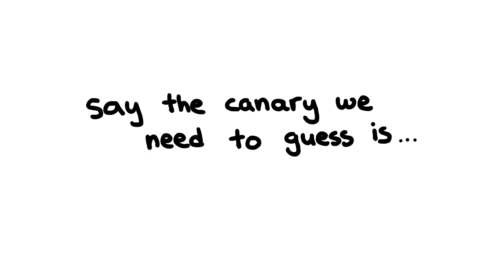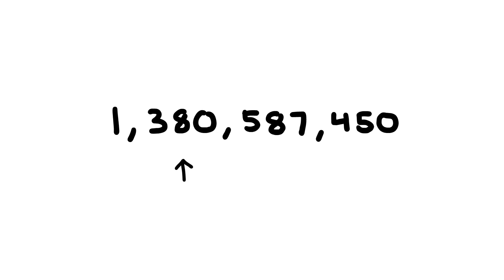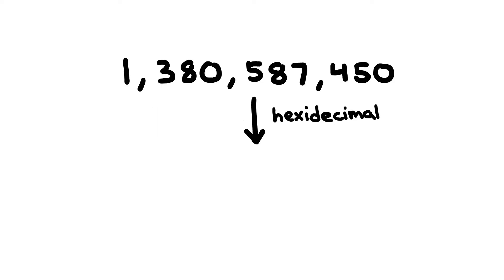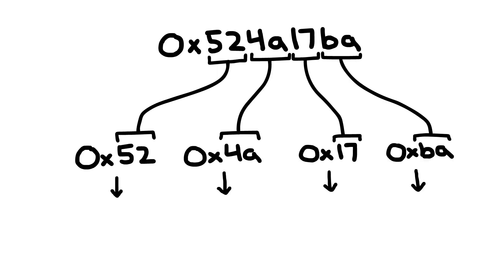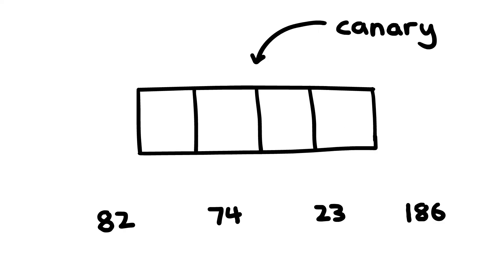Say the canary we need to guess is 1,380,587,450. If we translate this number into base 16 hexadecimal, we get this, which can be split into bytes like this and converted to base 10 decimal to make it easier for us to work with. So the numbers we have to guess in order to get the canary correct are 82, 74, 23, and 186.